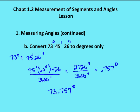So my answer, converting 73 degrees, 45 minutes, 26 seconds to degrees only, will be 73.757 degrees.